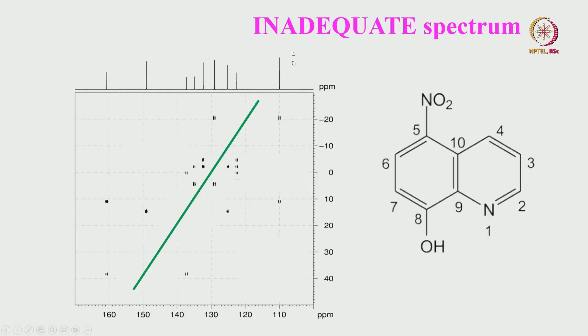I started analyzing one spectrum in the last class. We will repeat that and continue from this spectrum again. This is the INADEQUATE spectrum. In the previous class we analyzed the proton spectrum and multiplicity-edited carbon, HSQC, etc. In the 2D spectrum, I have drawn a diagonal here which I said is a pseudo double quantum diagonal. Each cross section pertaining to the F1 dimension pertains to the sum of the chemical shifts of the two coupled carbons - it is a double quantum dimension.